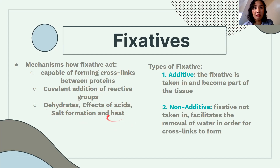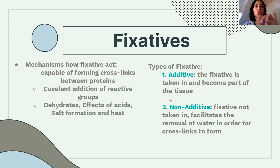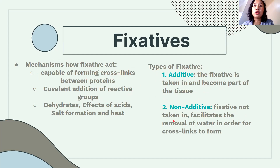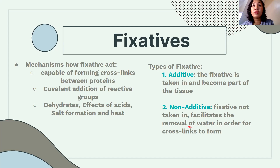There are two types of fixatives by action. Additive fixatives penetrate and become part of the tissue — forming cross-links like formaldehyde. Metallic fixatives are also additive. Non-additive fixatives are not taken in — they facilitate the removal of water for cross-links to form. Alcohols at the right concentration can be fixatives and they are non-additive.